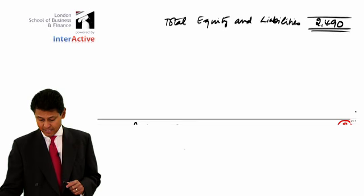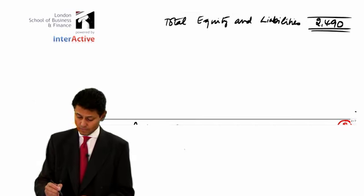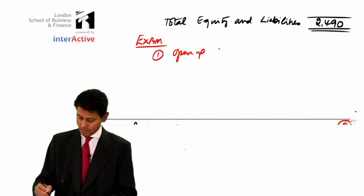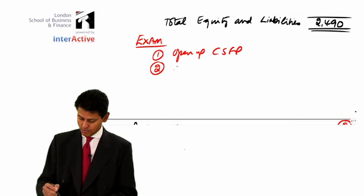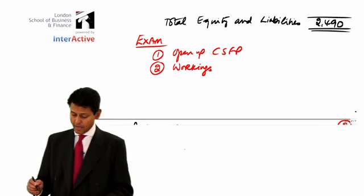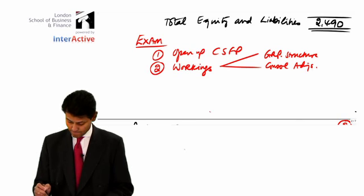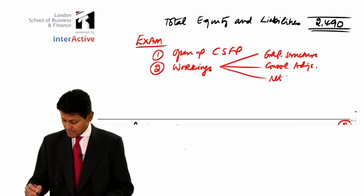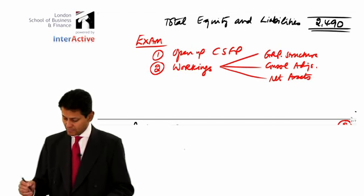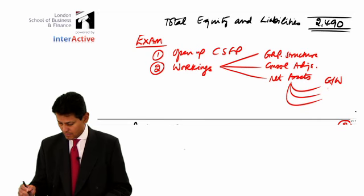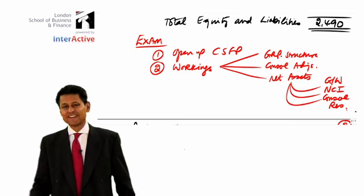So, again, I'd just like to show you the technique I used to summarize. So, what to remember from that. In the exam, the first thing you do is you open up your CSFP. The second thing you do is you go to your workings. In your workings, you do things like the group structure, your consolidation adjustments, obviously your net assets, and from the net assets, you do your big three. You see? Your Goodwill, the NCI, and the consolidated reserves. Okay, so that's the sort of general idea.